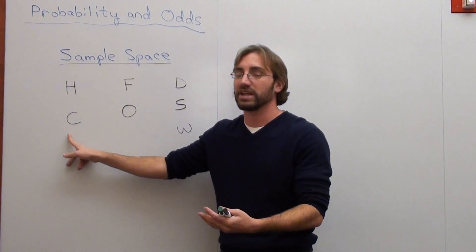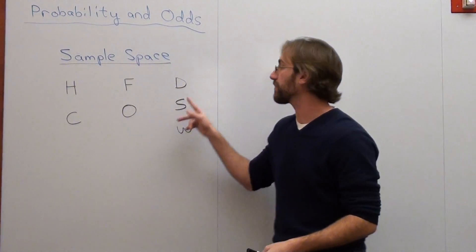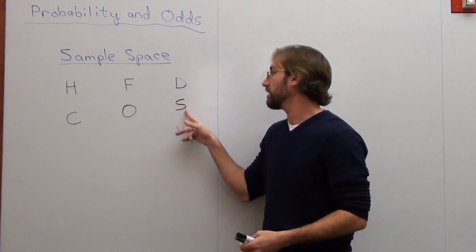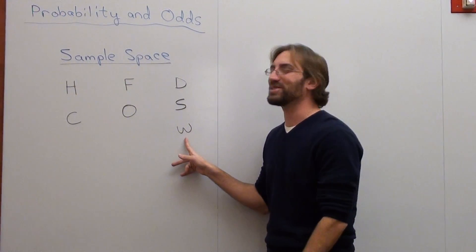So H stands for hamburger, C stands for cheeseburger, F stands for fries, O stands for onion rings, D stands for diet coke, S stands for a shake, and W stands for water.